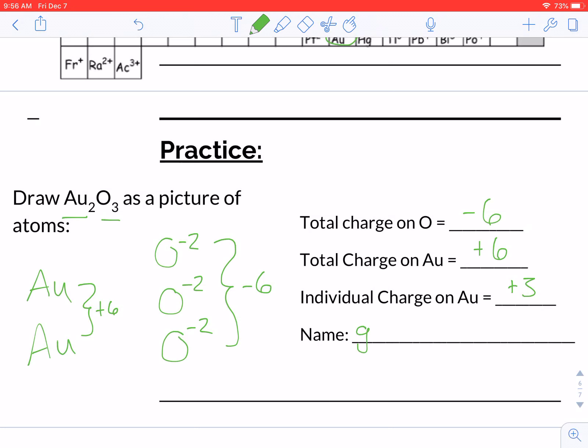And so when we name this, it will be gold, Roman numeral 3, oxide.